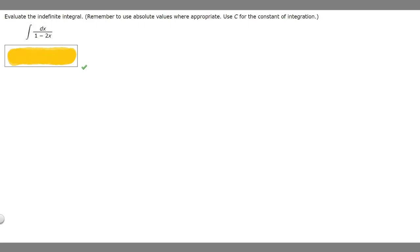Since we're using u-substitution, the first thing we have to decide is what is going to be u. In this case they don't really give us much of an option, so it's just going to be 1 minus 2x because there's really nothing else.